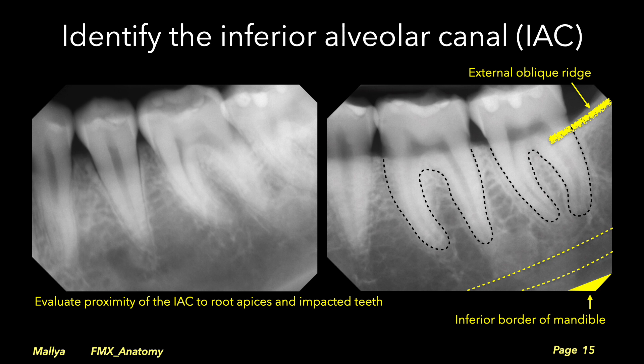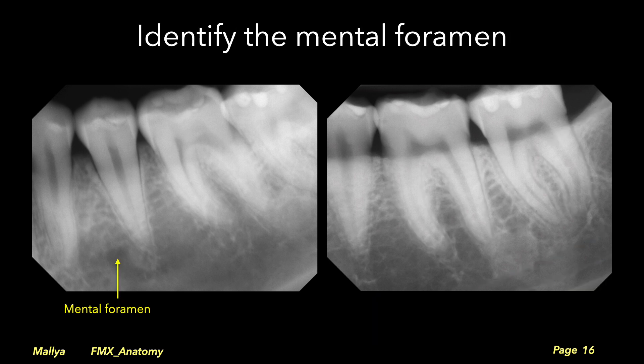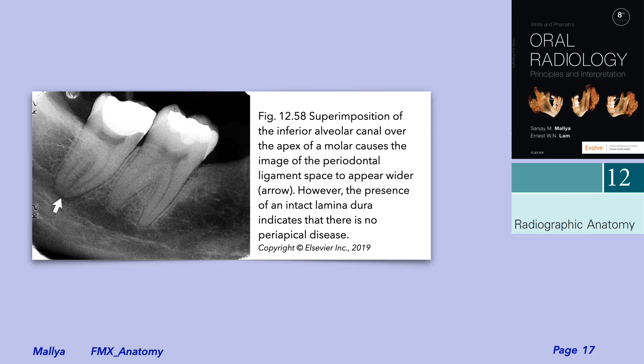Note the proximity of the canal to the apices of the adjacent teeth and to any impacted teeth. Identify the mental foramen, typically located between the roots of the mandibular premolars. Note that when the inferior alveolar canal is superimposed over the root apex, it may cause the periodontal ligament space to appear wider. The presence of an intact laminar dura will be indicative of the absence of periapical disease.